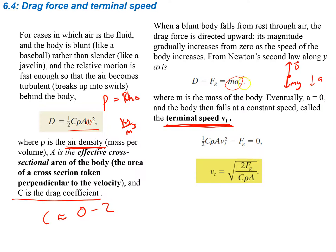To find terminal speed, we set drag force minus gravitational force equal to zero (since acceleration is zero) and rearrange. The terminal velocity vt is equal to the square root of 2Fg divided by CρA, where Fg is the gravitational force (mass times g = 9.8), C is the drag coefficient, ρ is the density of the air or fluid, and A is the cross-sectional area.